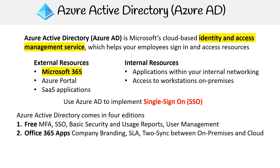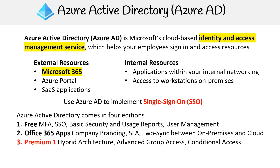The Office 365 apps tier gives you company branding, a service level agreement, and sync between on-premises and cloud. The last two tiers to take note of — because we do mention some of their features in this course — are Premium One and Premium Two, commonly abbreviated as P1 and P2. P1 includes hybrid architecture, advanced group access, and conditional access.